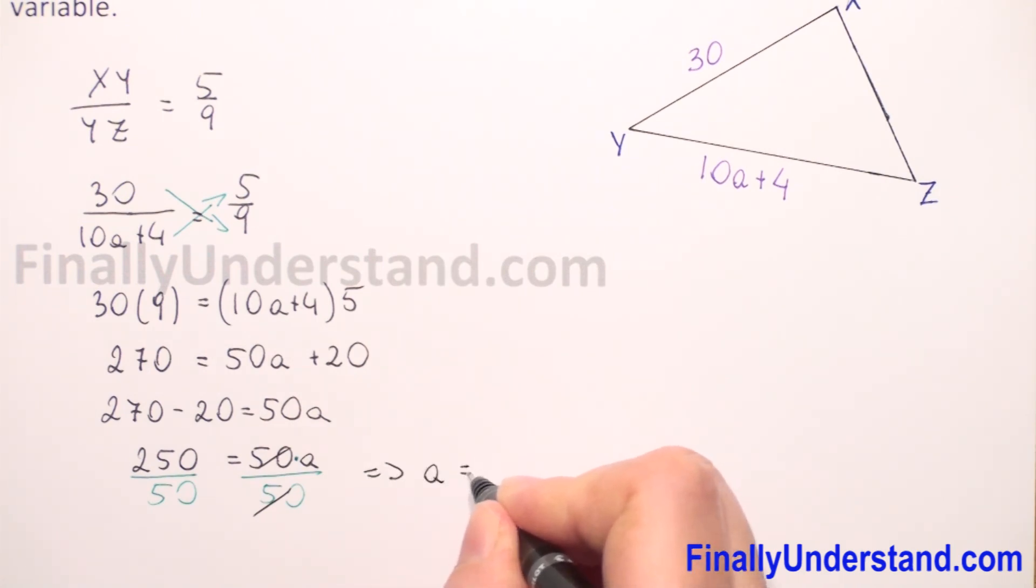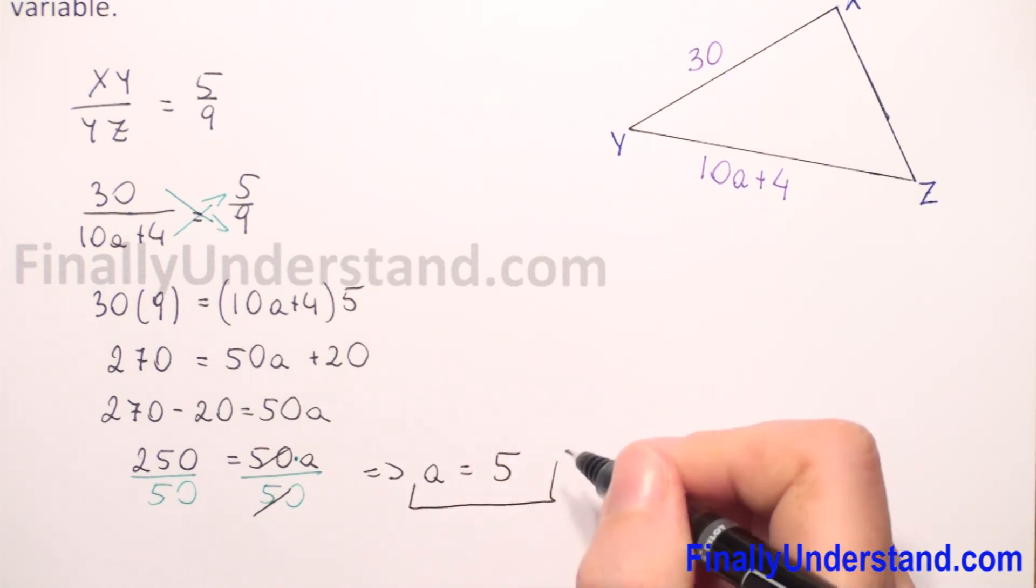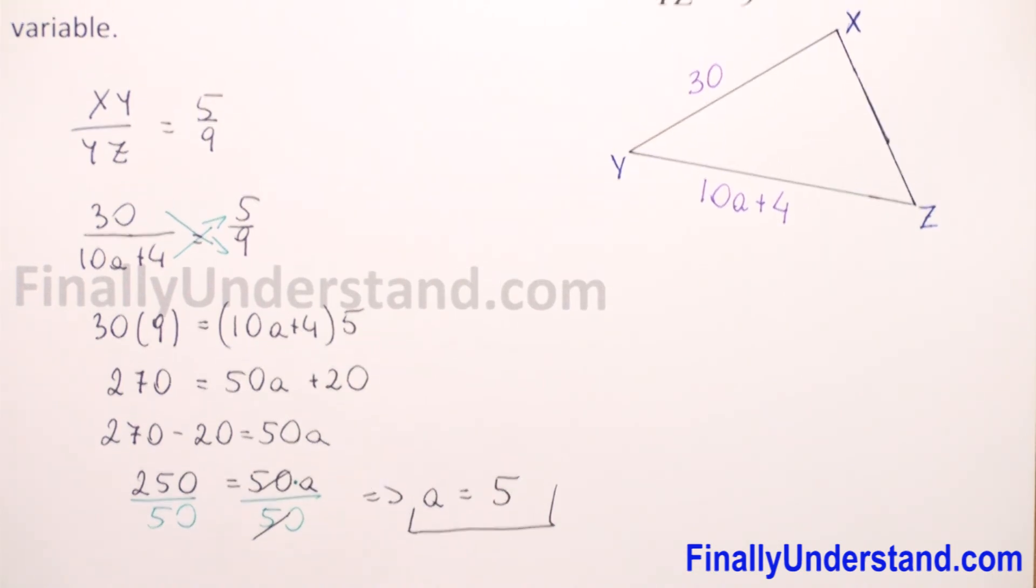and we have that a is equal to 250 divided by 50 is 5. We find the variable a. This is my solution.